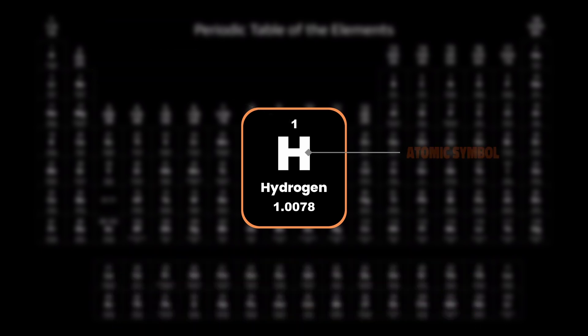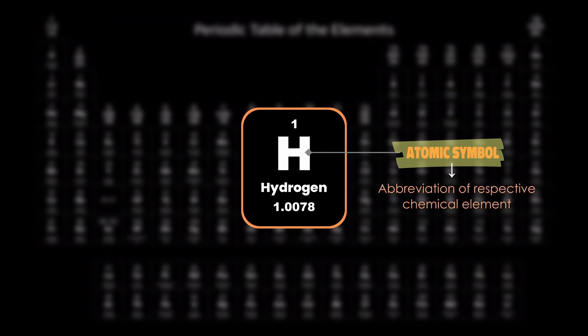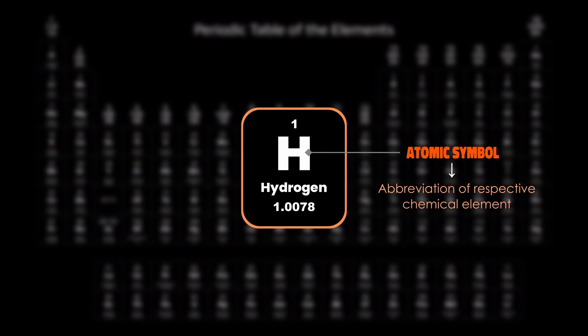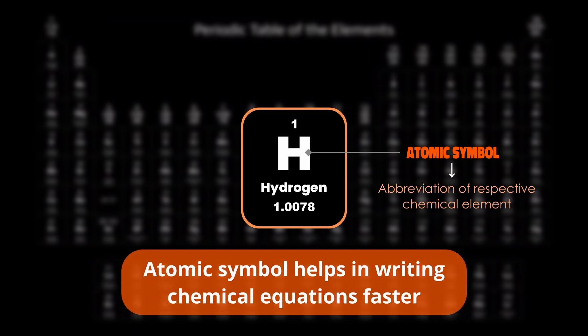The next crucial aspect is the atomic symbol. The atomic symbol gives us an abbreviation of every element. These symbols are accepted internationally and are useful because they help us write chemical equations faster and help us remember the elements with greater ease.